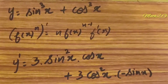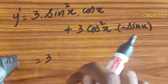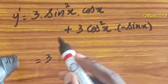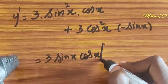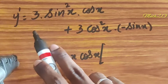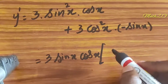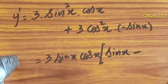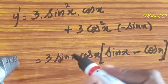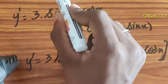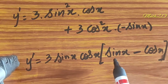Simplifying: 3 is common, sin and cos are common factors. So y dash is equal to 3 sin x cos x into sin x minus cos x.